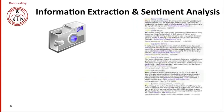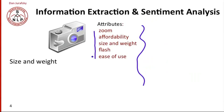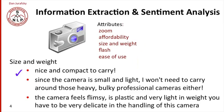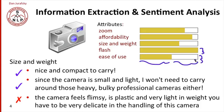Another application of this kind of information extraction involves sentiment analysis. Imagine that you're interested in cameras and you're reading a lot of reviews on the web. We'd like to automatically determine from the reviews what people care about — particular attributes like good zoom, affordability, or size and weight. Then for any particular attribute, we want to determine how reviewers felt about it. For example, 'nice and compact to carry' is positive sentiment, while 'flimsy' is negative. We'd like to automatically detect sentiment for each sentence and then aggregate across features — say, for zoom or affordability — so we might decide that reviewers really liked the flash but weren't so happy about ease of view.